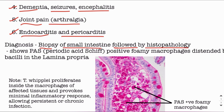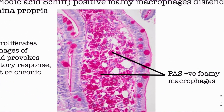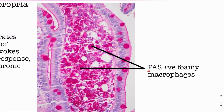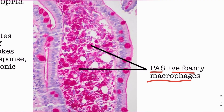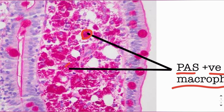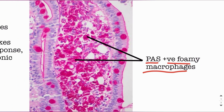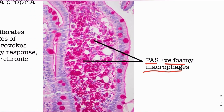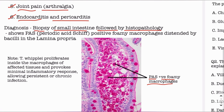Diagnosis of the disease is made by biopsy of the small intestine followed by histopathology. The histopathology shows PAS-positive foamy macrophages in the lamina propria. These are distended macrophages that appear foamy and stain positive with the Periodic Acid-Schiff stain. They are found in the lamina propria and are distended due to the proliferation of Tropheryma whipplei inside these cells. This is the classic histological feature of Whipple's disease.